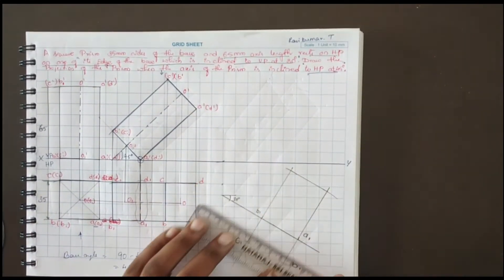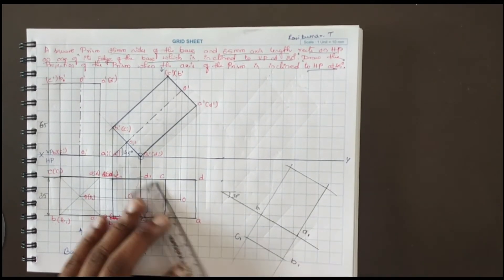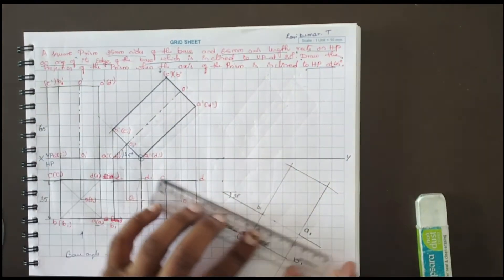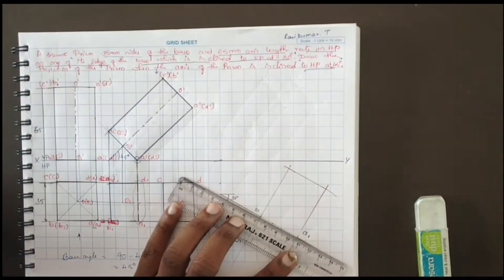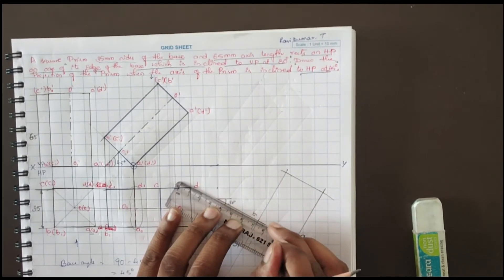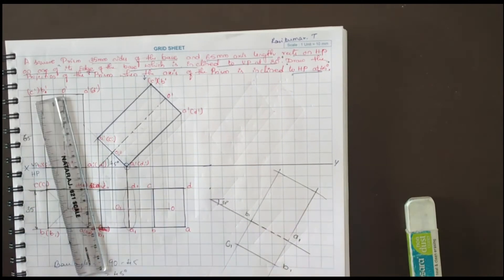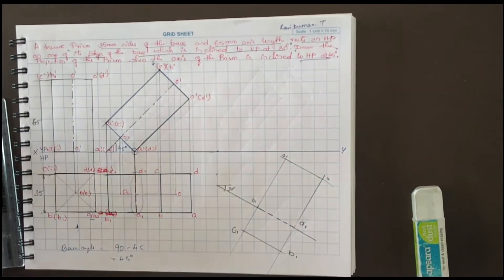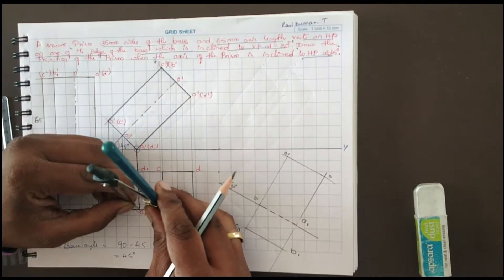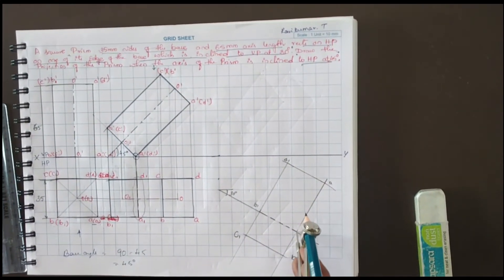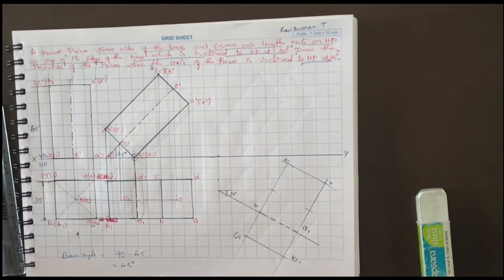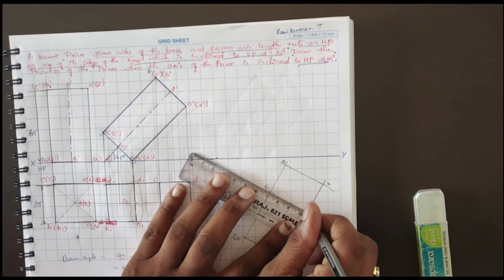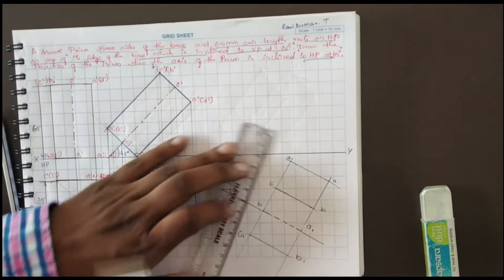Complete the profile — join this, join this. So why I have taken this problem is because students will make a mistake here. You have to be very careful. The resting edge is inclined to VP. I left out only one: A and D. I left out B and C. Just in a similar way, measure from A1 to B, same distance with C — this is B and C. Now complete this profile.